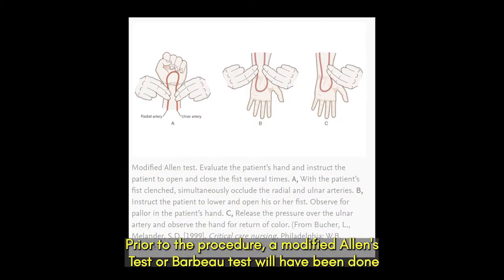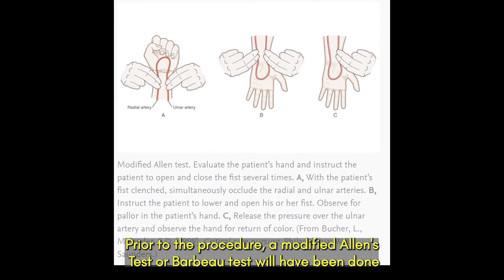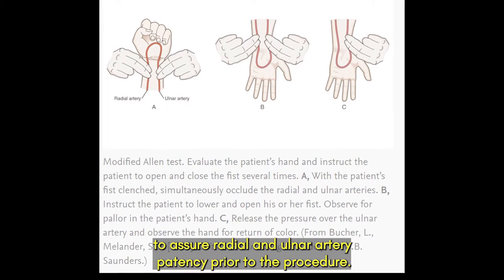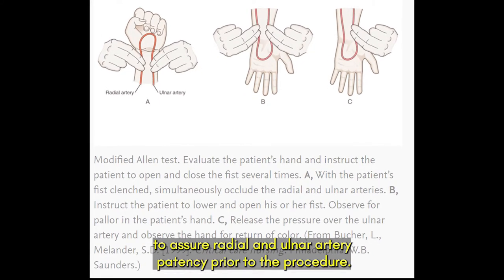Prior to the procedure, a modified Allen's test or Barbo test will have been done to assure radial and ulnar artery patency prior to the procedure.